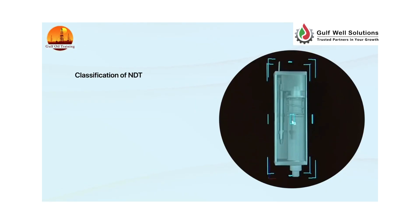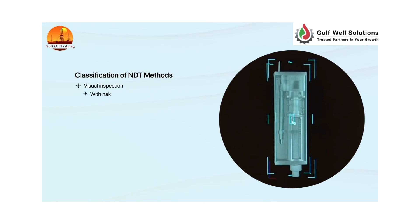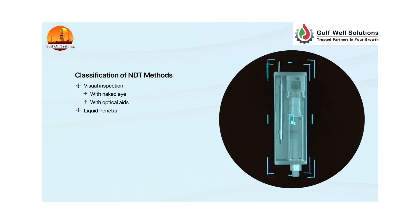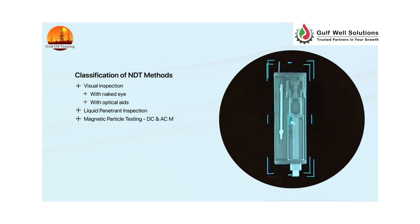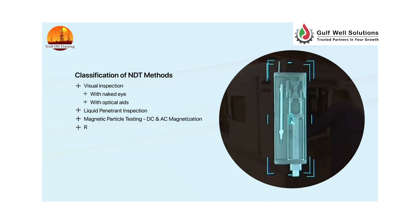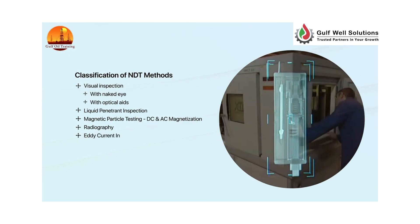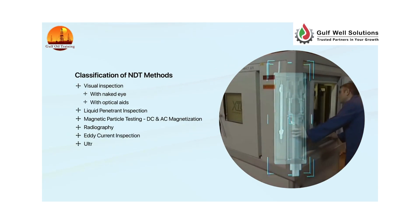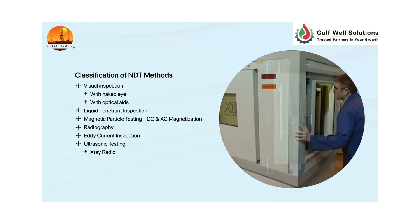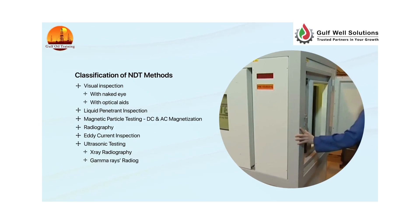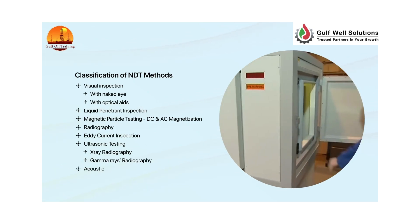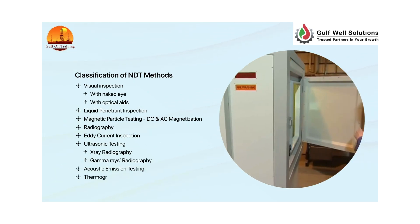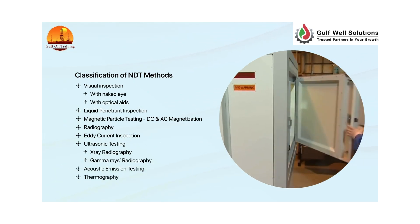Classification of NDT methods includes: visual inspection — with the naked eye or with optical aids; liquid penetrant inspection; magnetic particle testing using DC and AC magnetization; radiography; eddy current inspection; ultrasonic testing; x-ray radiography; gamma ray radiography; acoustic emission testing; and thermography.